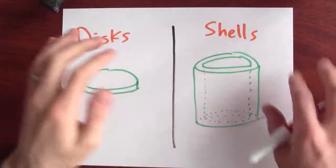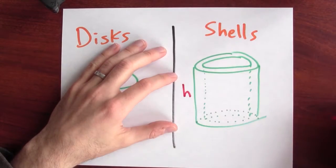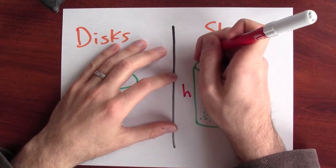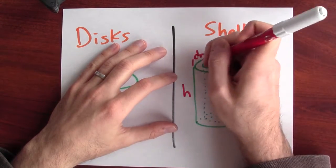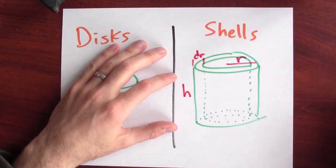So we need to write down a formula for the volume of a shell in terms of its height, its radius, and that thin dr. Let me label those parts on the diagram here. The height of the shell I'll call h. The thickness of the shell I'll call dr. And the radius of the shell I'll just call r.